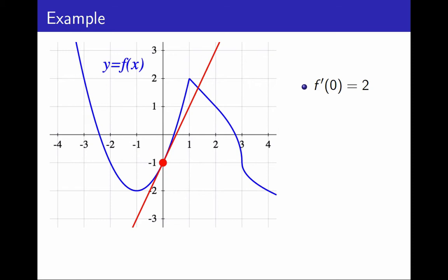Or, if I want to compute f prime of negative 1, I look for the point in the graph with x-coordinate minus 1. And the tangent line at that point is horizontal. So it has a slope 0. So f prime of negative 1 is 0.